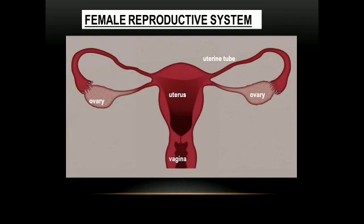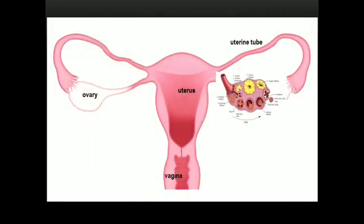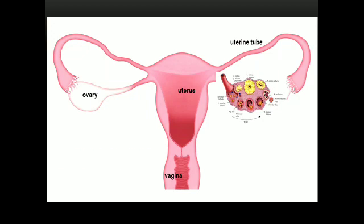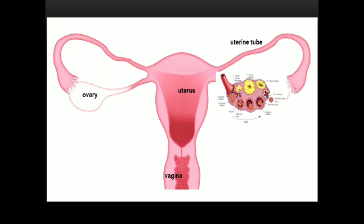The female reproductive system consists of a pair of ovaries — right side and left side — along with a pair of fallopian tubes (uterine tubes), a uterus, and a vagina. The ovaries are the female gonads located in the pelvic cavity, attached to the broad ligament of the uterus. They perform oogenesis — the formation, maturation, and development of oocytes — and also have an endocrine function, secreting hormones like progesterone and estrogen.